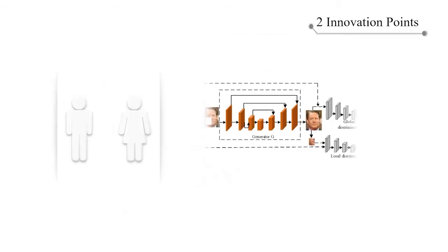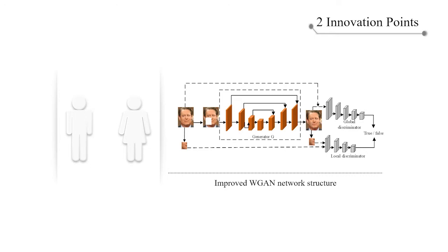Secondly, I would like to introduce the innovation of this paper. Firstly, the improved WGAN network structure consists of two parts. One part is the generator model G, which is used to generate pictures.